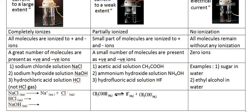In the strong electrolyte, complete ionization or dissociation occurs, which produces a greater amount of ions. In the weak electrolyte, partial ionization occurs, so very few ions are produced and conduction of electricity is weak. In the non-electrolyte, no ionization occurs at all, so there are no ions and consequently no conduction of electric current.